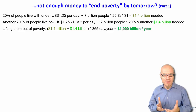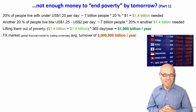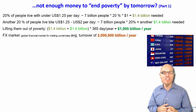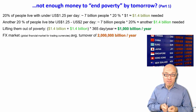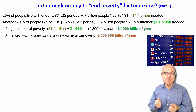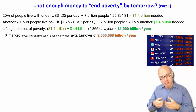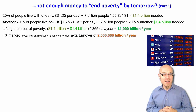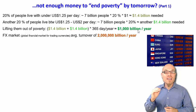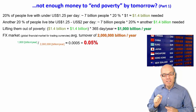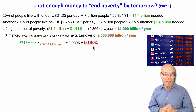So let's look at some orders of magnitude of other things that happen on the globe. For example, the foreign exchange market — the FX market, the global financial market for trading currency — has an average annual turnover of $2 million billion. So $2 million billion per year are just traded to exchange currencies, changing from dollars to euros or yen or whatever. Our trillion dollars — our $1,000 billion — is just 0.0005 of this $2 million billion volume of the global FX market.